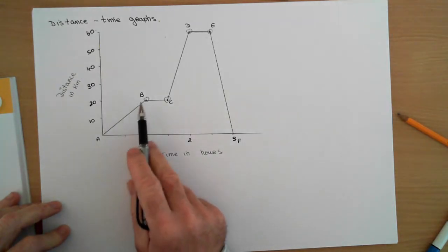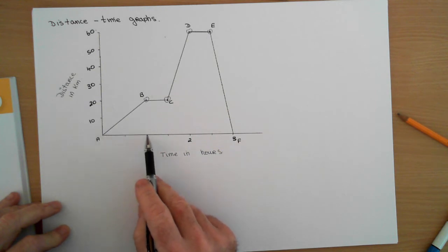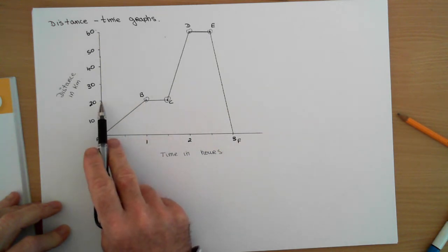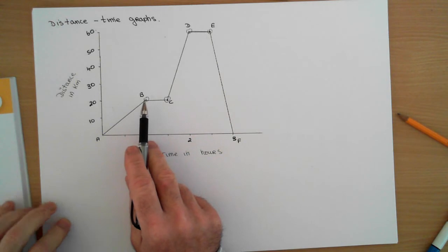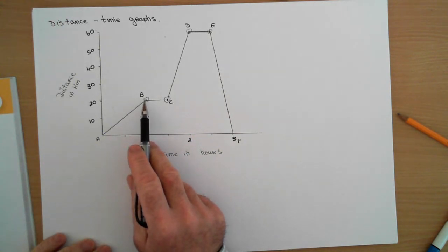This is from A to B. After one hour, how far was this person gone? 20 kilometers. So that means after one hour they had traveled 20 kilometers.